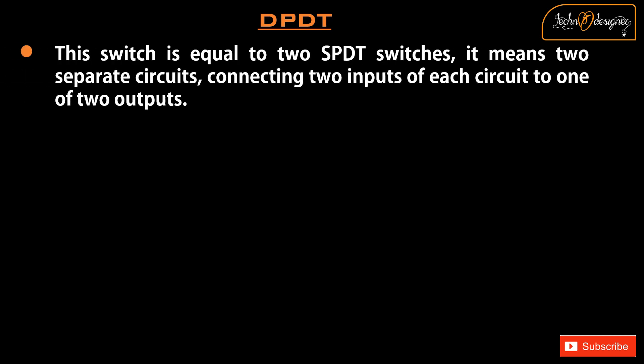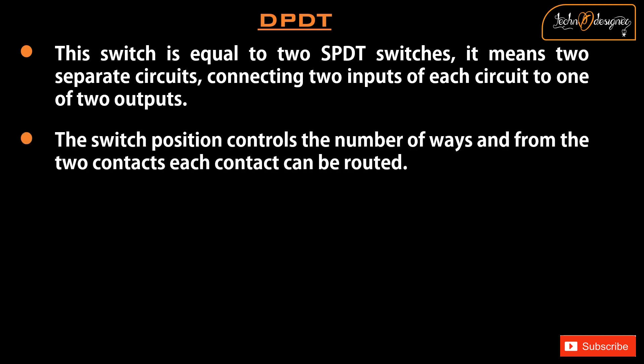DPDT. This switch is equal to two SPDT switches. It means two separate circuits, connecting two inputs of each circuit to one of two outputs. The switch position controls the number of ways and from the two contacts each contact can be routed.